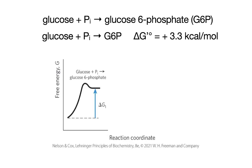Some reactions are going to be inherently energetically unfavorable — they'll have a positive delta G naught prime. Remember, that's saying if we were to start with standard conditions, so one molar, equal concentrations of products and reactants, and let them go to equilibrium, we'd come back and find more products than reactants if it's favorable, or more reactants than products if it's unfavorable.